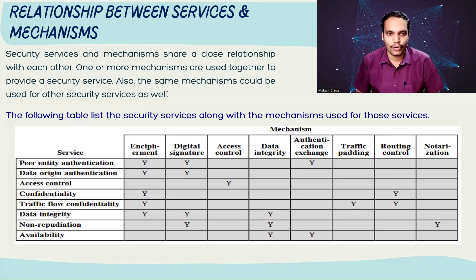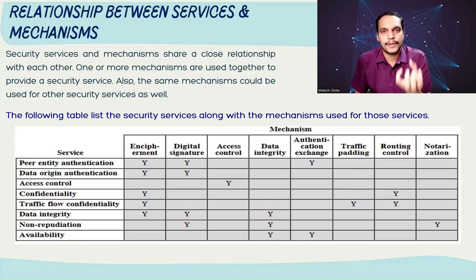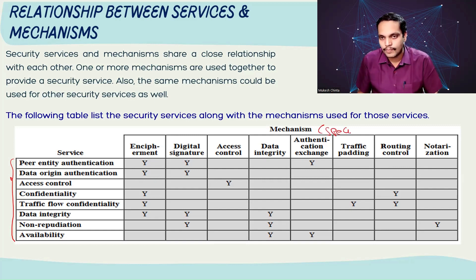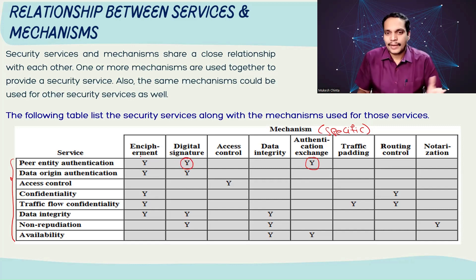Now let's look at the relationship between security services and mechanisms, referring to a diagram from the textbook. Security services and mechanisms share a close relationship — one or more mechanisms are used together to provide a security service, not just one particular mechanism. You can mix these mechanisms to provide a specific and tailored service. The same mechanisms can also be used for other security services. For peer entity authentication, encipherment, digital signature, and authentication exchange mechanisms can be used or mixed together.